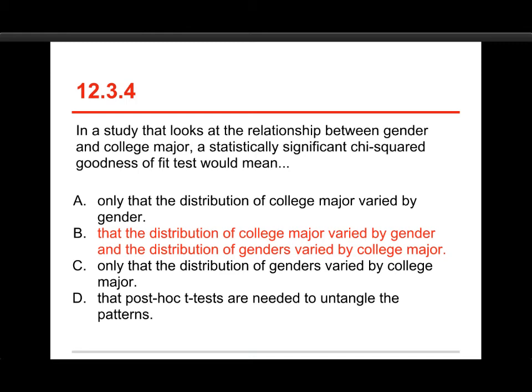But the test for independence simply says that the one varies by the other, and it's sort of agnostic about which one comes first. A and C are directional, and that's not it, meaning that it's only this one that varies. D, the post-hoc t-tests are usually used when you do the analysis of variance.